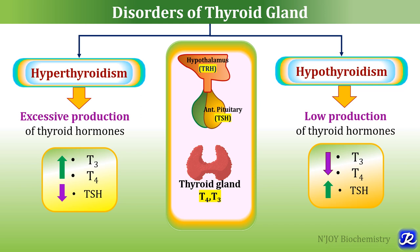When the thyroid gland itself is directly affected, it results in primary disorders of the thyroid gland — primary hyperthyroidism or primary hypothyroidism. If the pituitary gland is affected, it results in a secondary disorder, and if the hypothalamus is affected, it is a tertiary disorder.